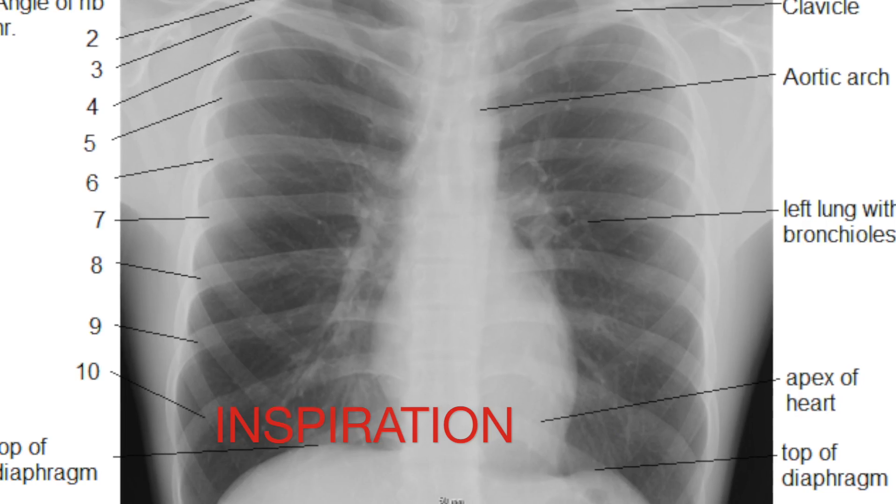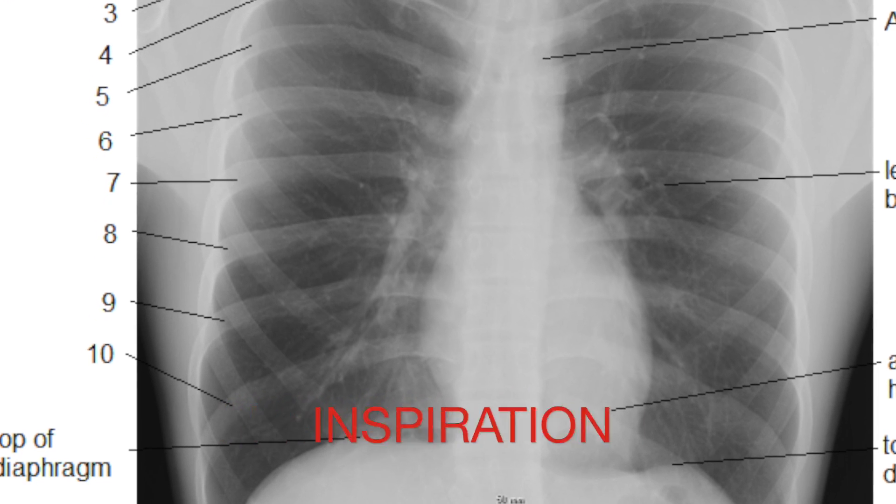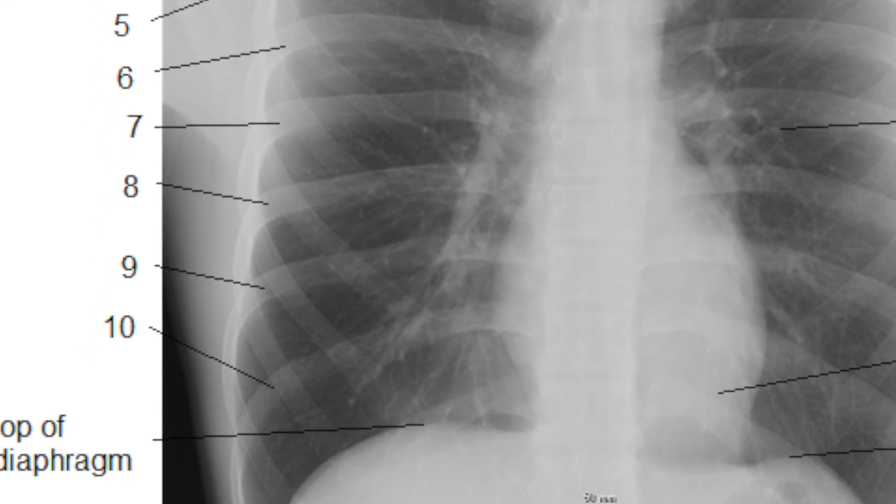And then inspiration. The posterior aspect of the 10th or 11th rib should be at the right costophrenic sulcus.